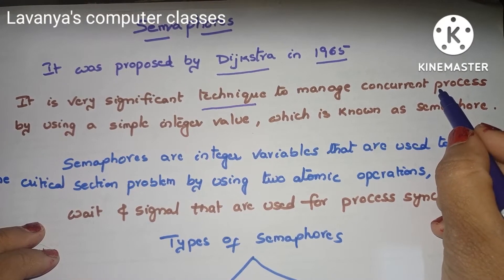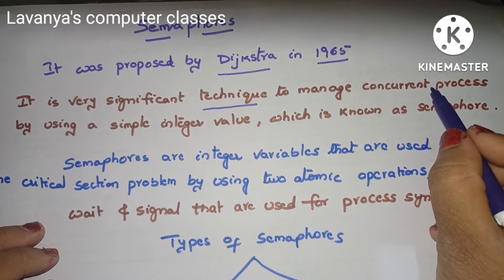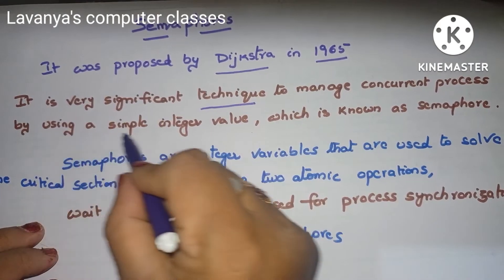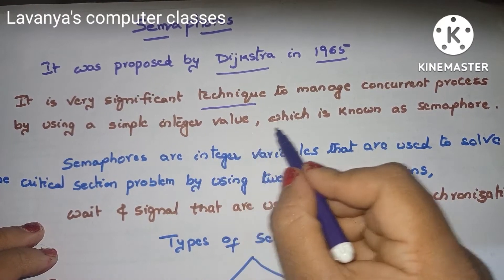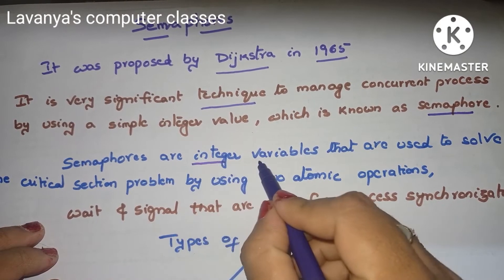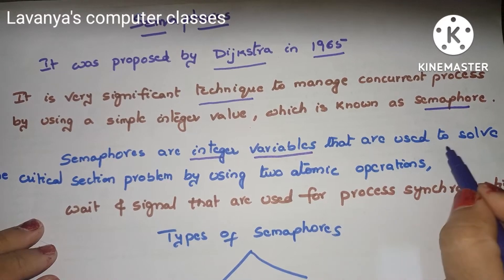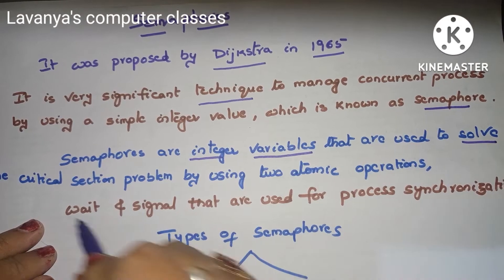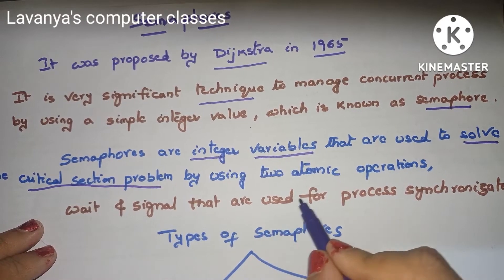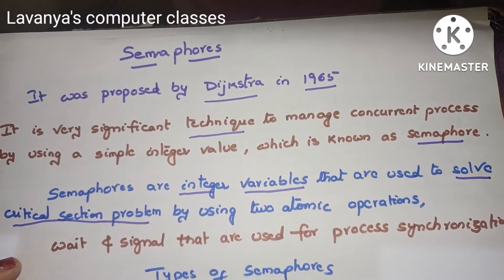In an operating system, many processes execute simultaneously and concurrently. We need a technique using a simple integer value, which is known as a semaphore. A semaphore is an integer variable used to solve the critical section problem using two atomic operations.